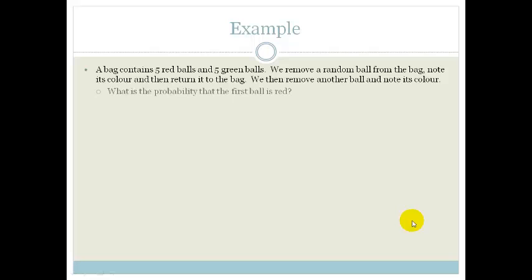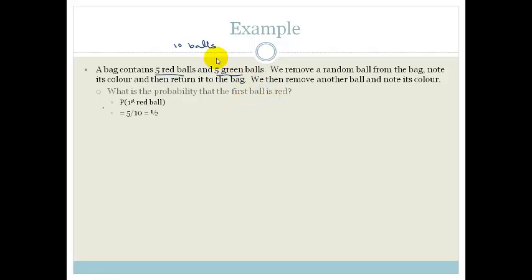What is the probability that the first ball is red? We've got five red balls and five green balls, therefore ten balls altogether. So the probability that the first ball is going to be red is five out of ten, which is a half.